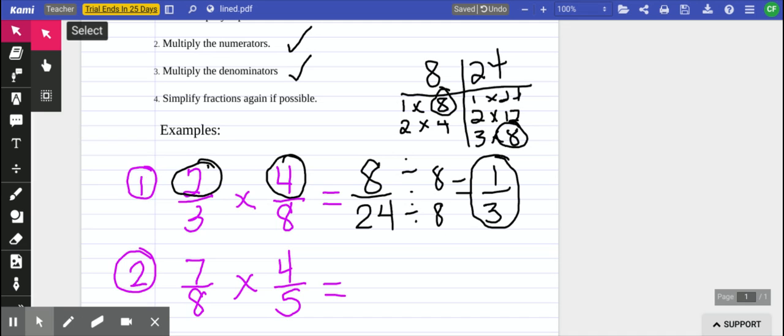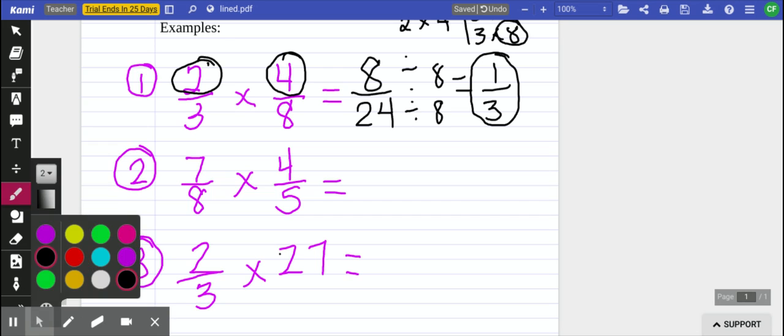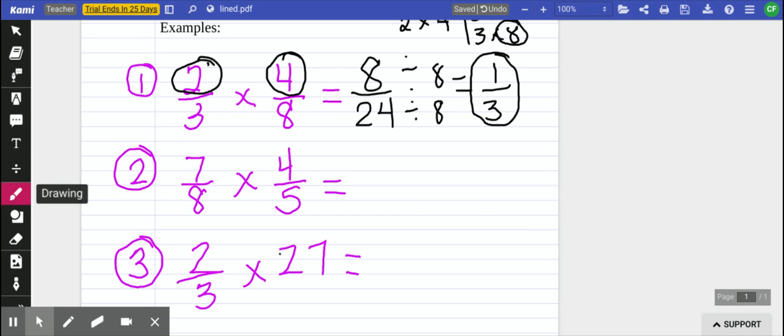Now we're going to move on to example number 2. This time, we are going to use cross-simplifying. Cross-simplifying is simplifying numbers that are across from each other.